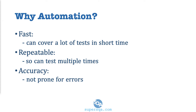If you are trying to execute hundreds of tests manually, it's going to take days to do it. But automation would actually execute all that in a matter of minutes because it could run in parallel. Even running single-threaded, it's still going to run way faster than a human can actually do it.